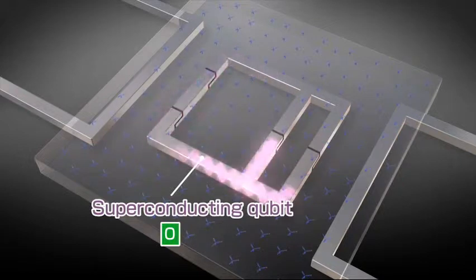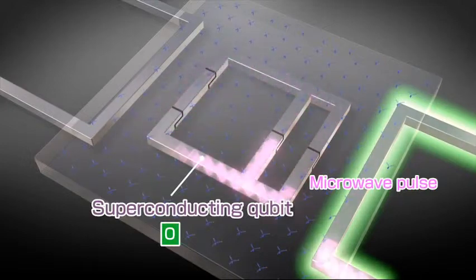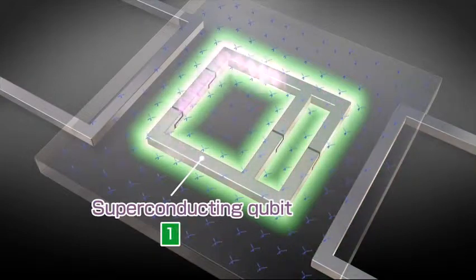By applying an external microwave pulse to a qubit as a trigger, one can reverse the direction in which the current flows in the qubit. This changes the state of the qubit from zero to one.